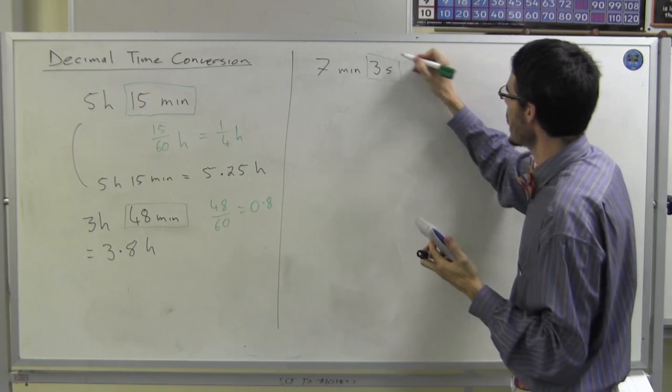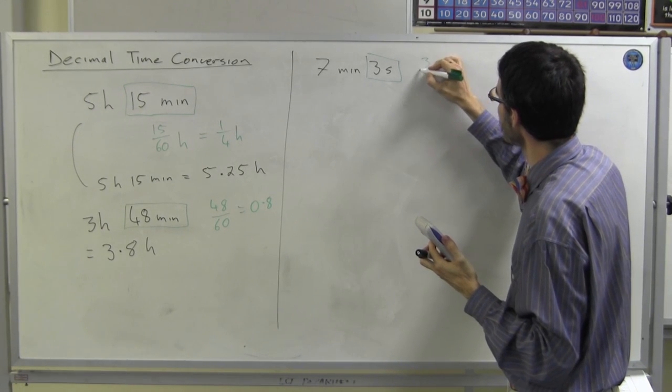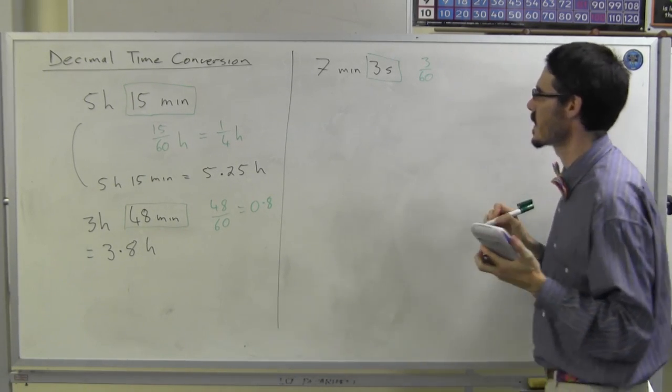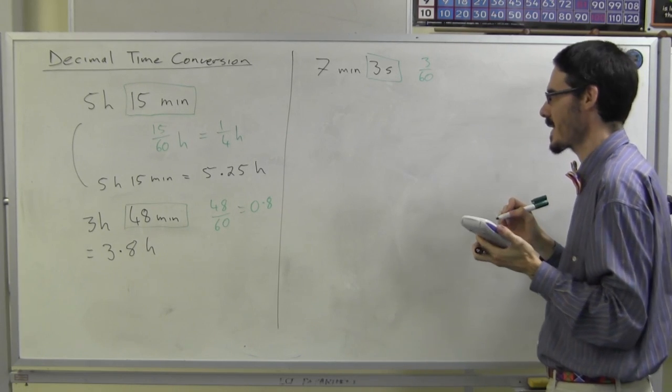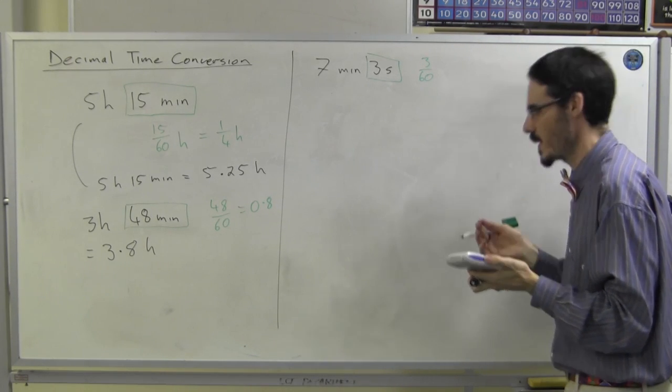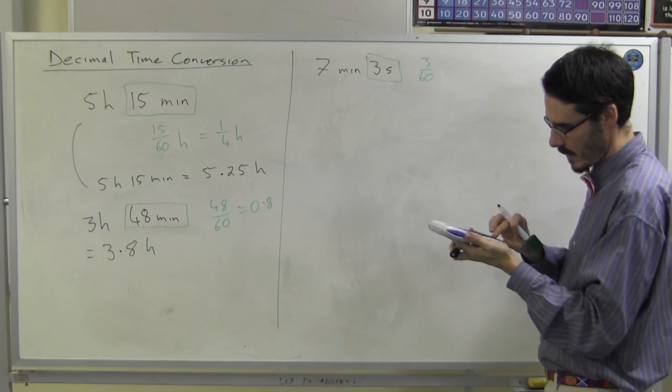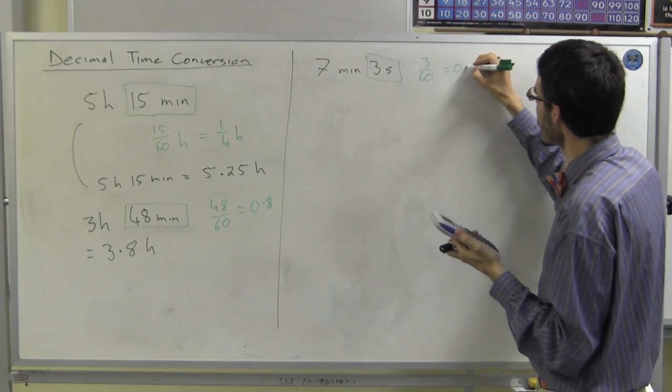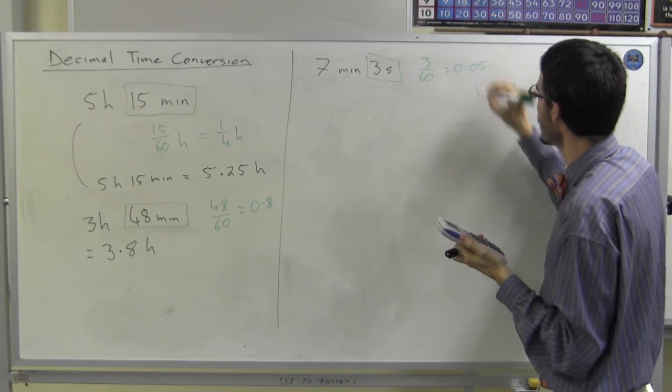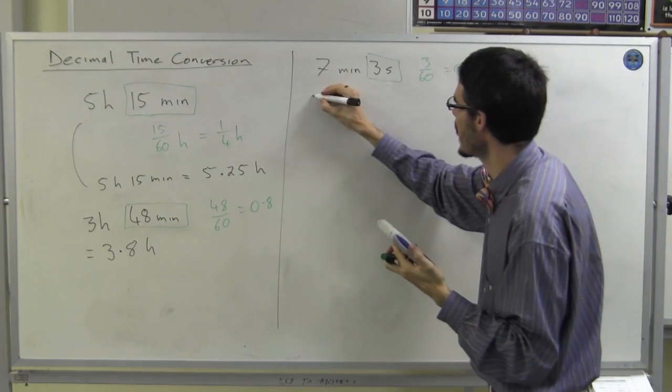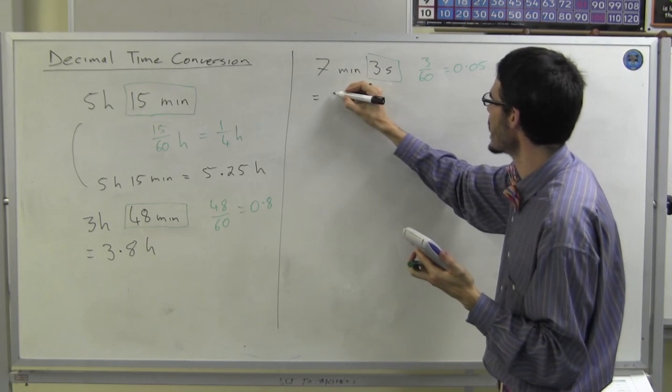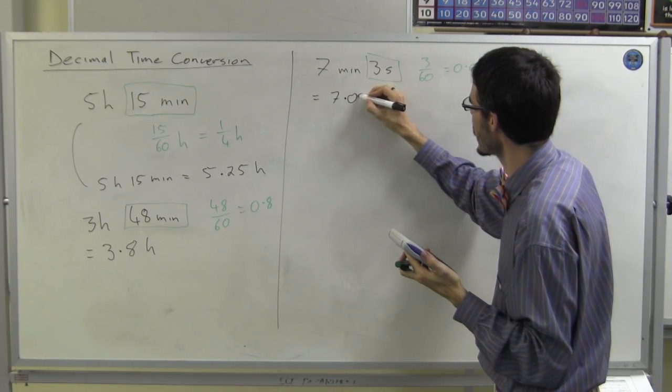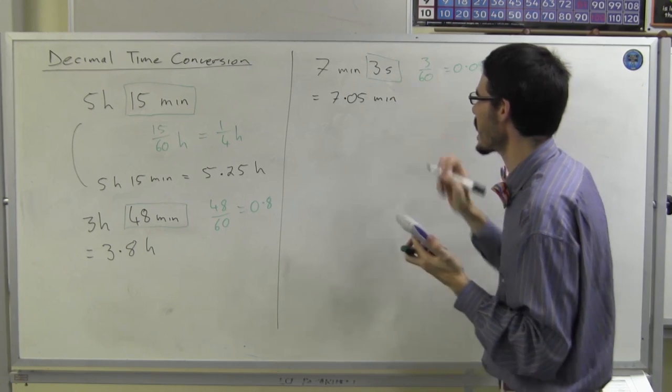Instead, treat this as 3 sixtieths. I need that as a decimal. If you're not sure, you can get your calculator. 3 divided by 60 is .05, which means this, 7 minutes, 3 seconds, is 7.05 minutes.